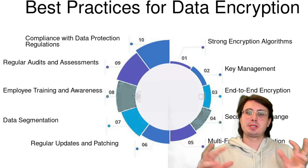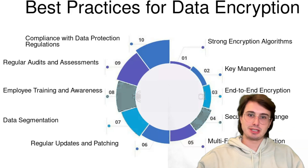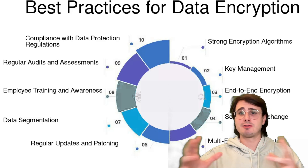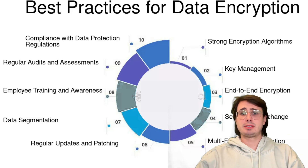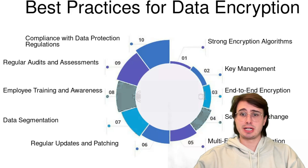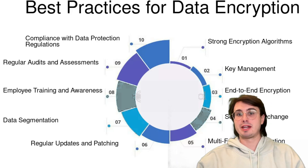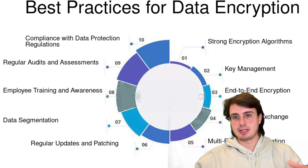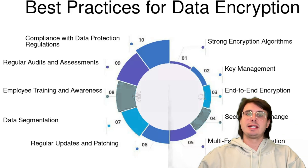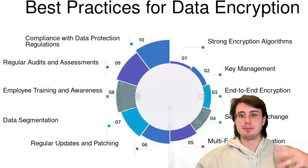For encryption in transit, use TLS 1.3 for all data transmission, implement certificate-based authentication for data transfers, consider using VPNs or private networks for sensitive data transfers, and encrypt API communications with proper authentication so you can track the message along with its authentication. Also implement message-level encryption for pub/sub systems.